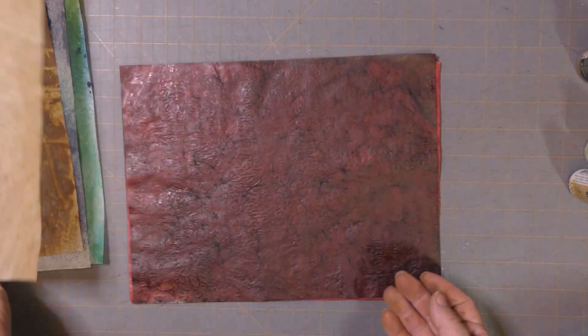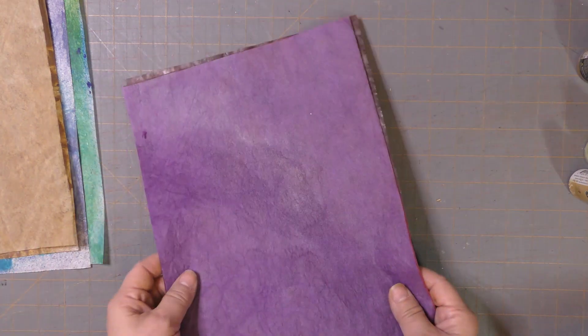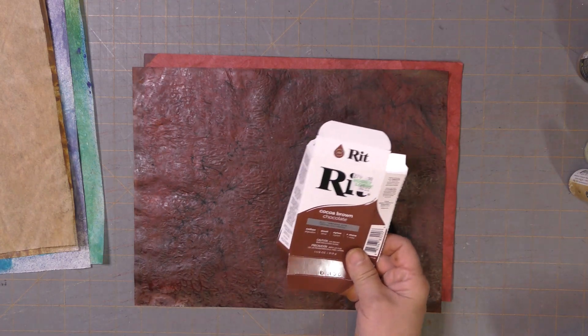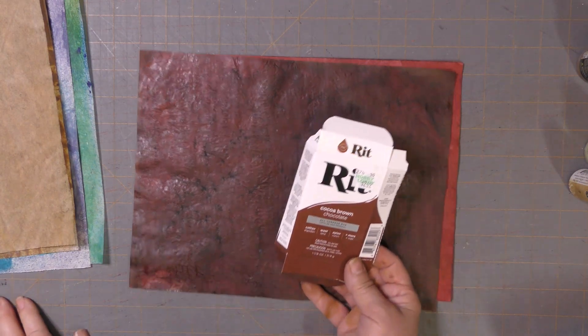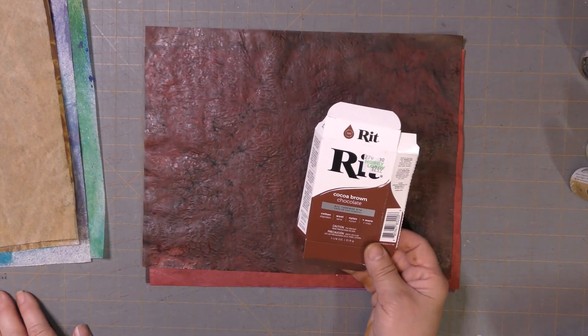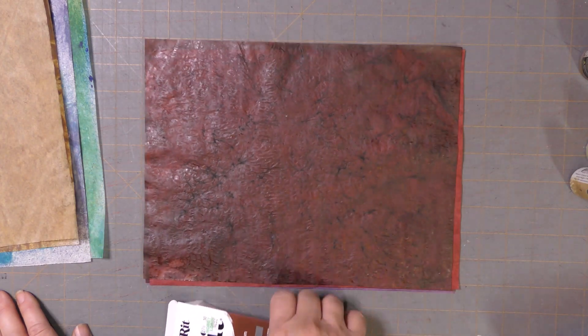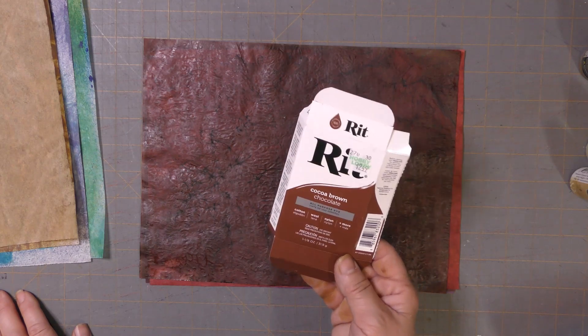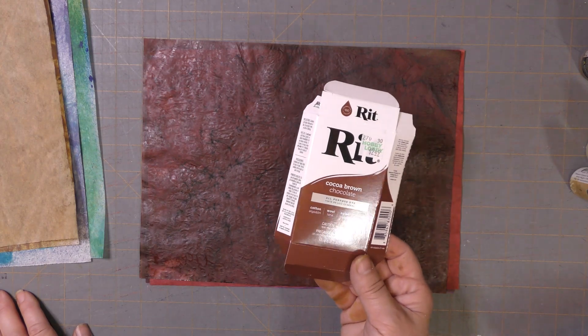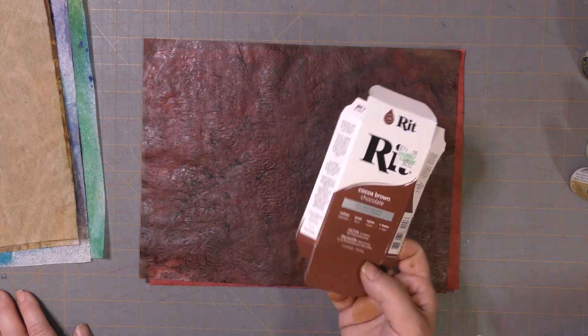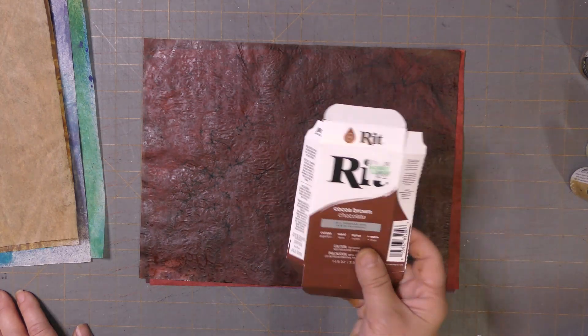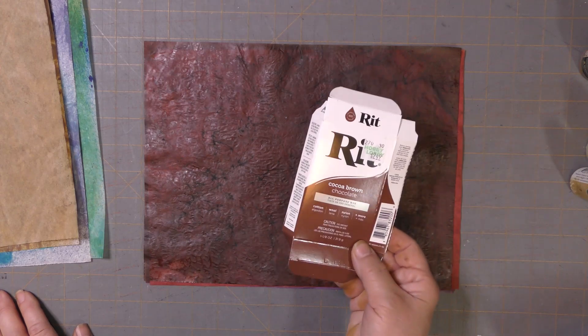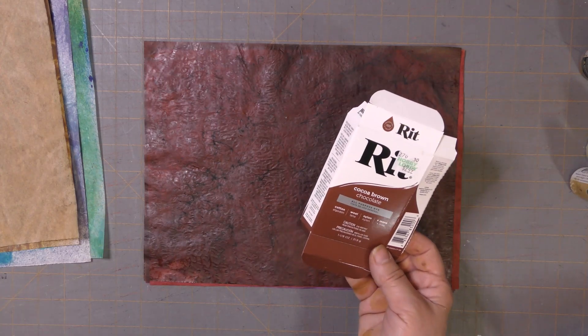These are done using Rit dye, which is a pretty common brand around here. This color is actually chocolate brown, which I adore. It's more like a cognac color, but it's called chocolate brown. I thought yes, I need that color for my chocolate journal. The powder is fairly inexpensive and readily available.